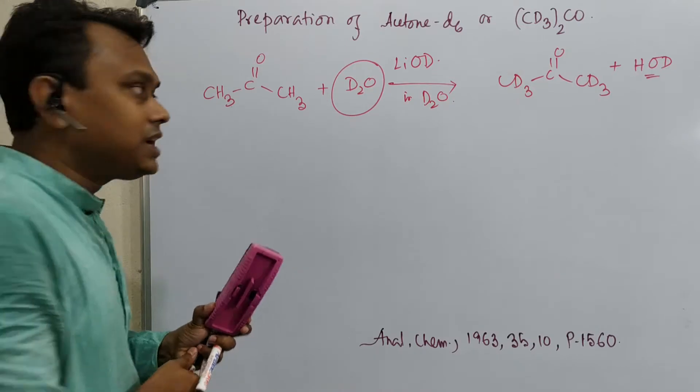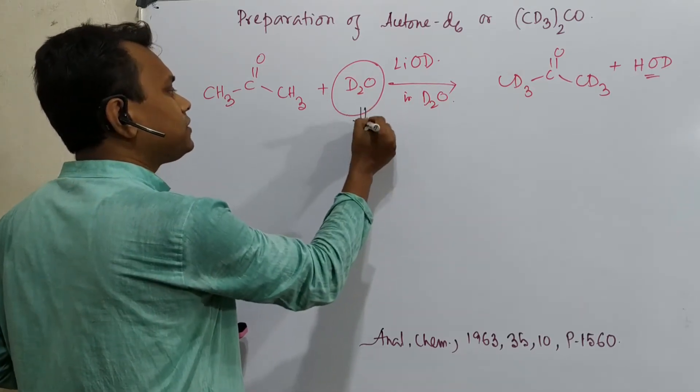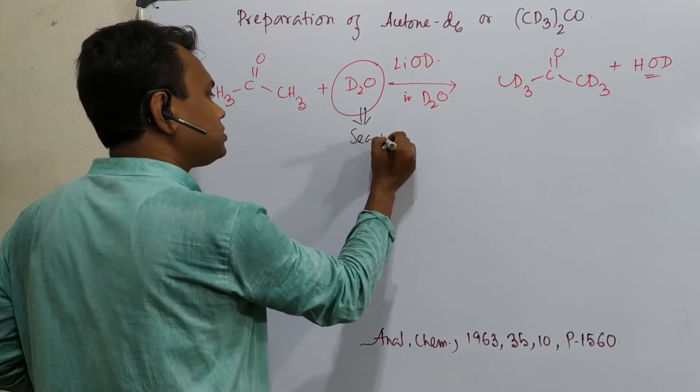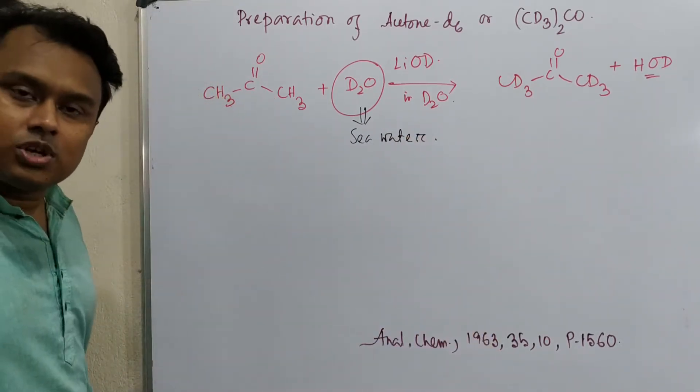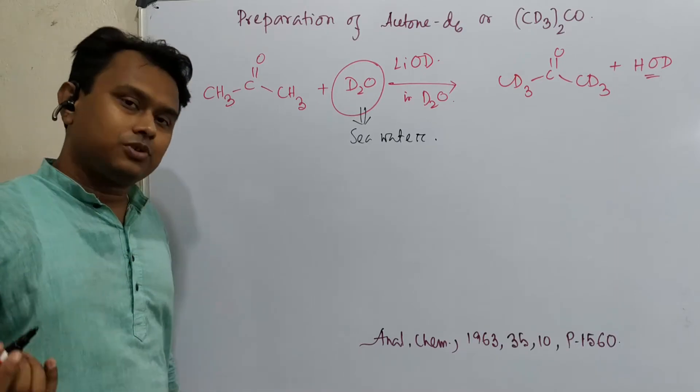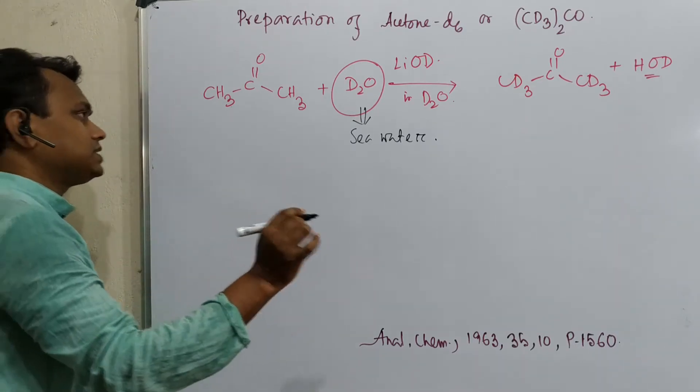Now, how is D2O prepared? D2O is produced by fractional distillation of sea water. How is acetone prepared? Acetone is an industrial product from the cumene-phenol process, which I have already discussed in a previous video, so please visit.